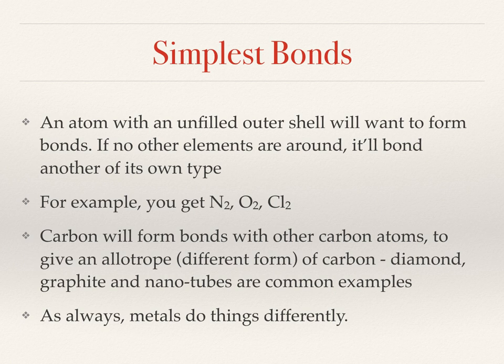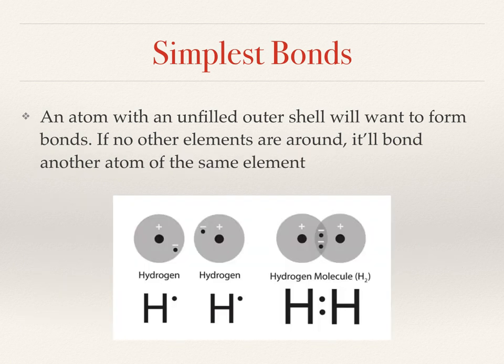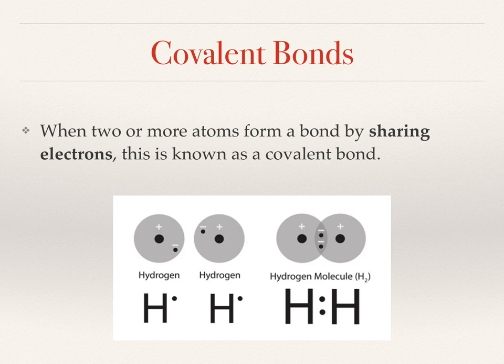An atom with an unfilled outer shell of electrons - that is anything but the noble gases - will want to form bonds with other atoms to fill up its outer electron shell. In the example with hydrogen, each hydrogen atom has a single electron shown by a single Lewis dot. When they pair up to form the hydrogen molecule, the electrons are shared between the two atoms. Hydrogen has two electrons in its valence shell, so a full shell for hydrogen has two electrons. After that it goes up in steps of eight. So the hydrogen molecule is happy - it has two electrons and a full shell. This type of bond made by sharing electrons is called a covalent bond.